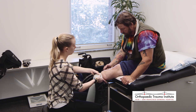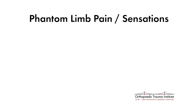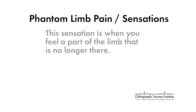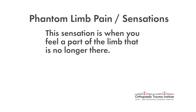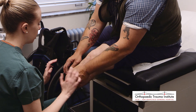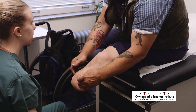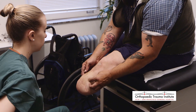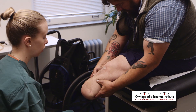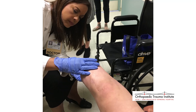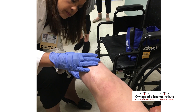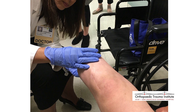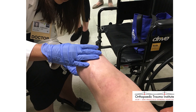Residual limb pain is different from phantom limb pain or phantom limb sensation. Phantom limb sensation is when you feel a part of the limb that is no longer there — for example, if you've had an amputation to part of your leg, you might feel that your toe is still there. Phantom sensations are very common and are due to the brain thinking that the limb is still there. One of the best ways to prevent and treat these phantom sensations is to constantly touch and massage the amputation area, giving your brain feedback that there has been a change in where your limb ends.